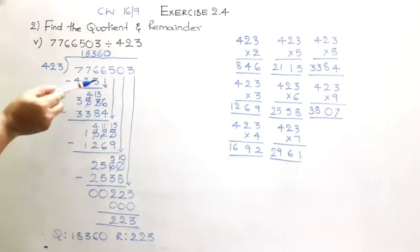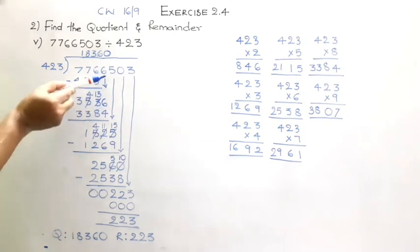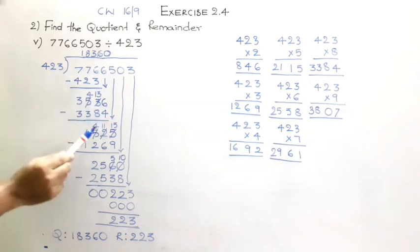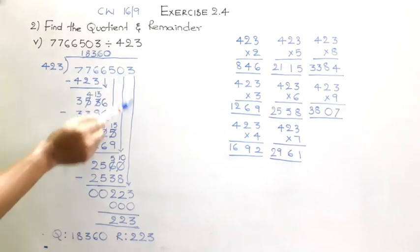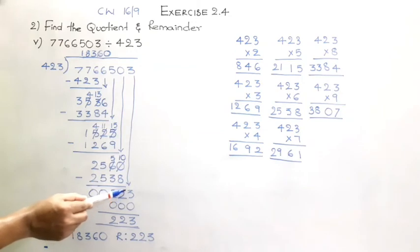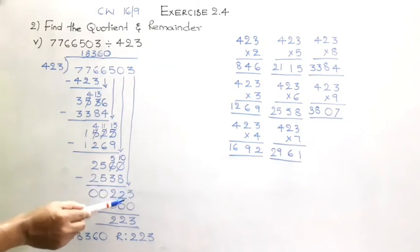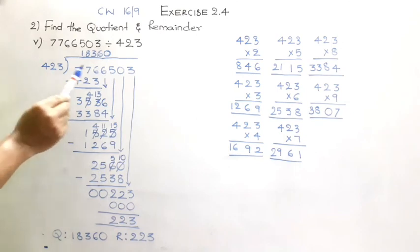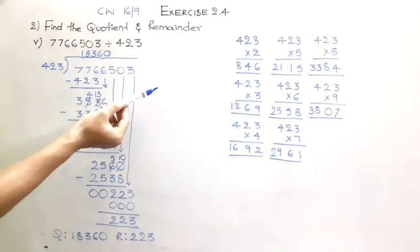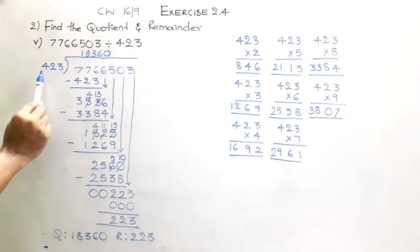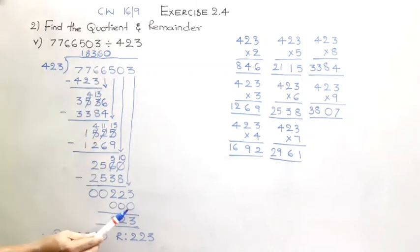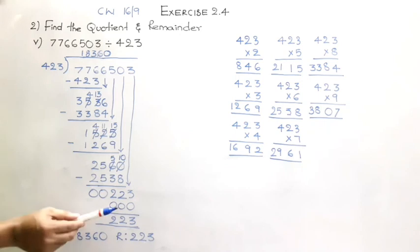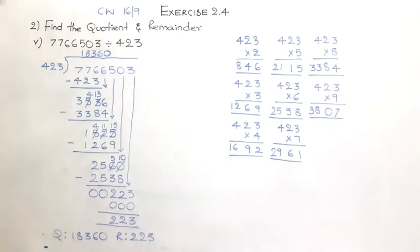Whenever we are dropping the digits we are calculating each step. But when we come to the point where we drop this 3, there is no chance of dividing 223 by 423. Since there are no more digits in the dividend, I use 423 times 0, kept 0 in the quotient, and then took the remainder. So please copy the given problems into your classwork carefully.